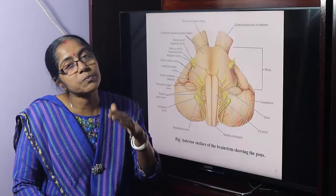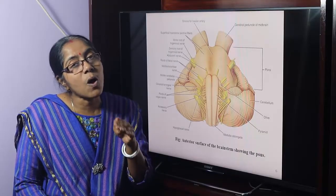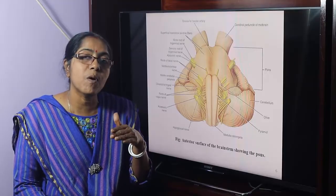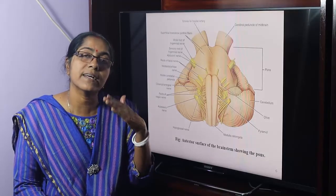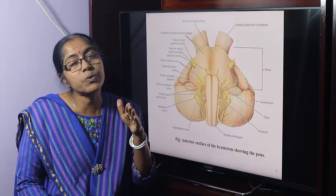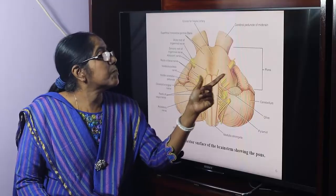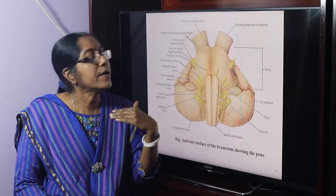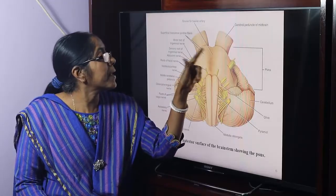We have a question: draw and label the transverse section of the pons at the level of the facial colliculi, and at the level of the trigeminal nucleus. These are the two levels of the transverse section of the pons.